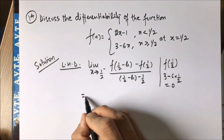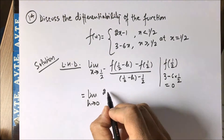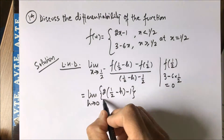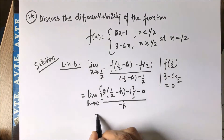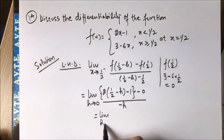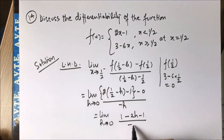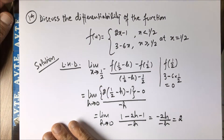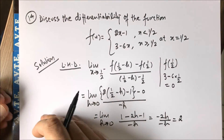The functional value f of 1/2 is 0. Now when we open the bracket, the left-hand derivative comes out to be 2. We already knew it would be 2.